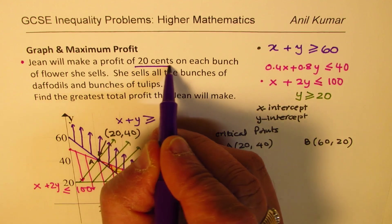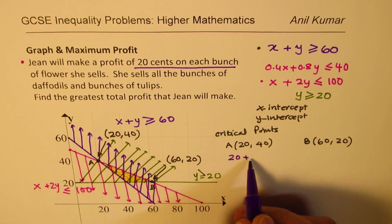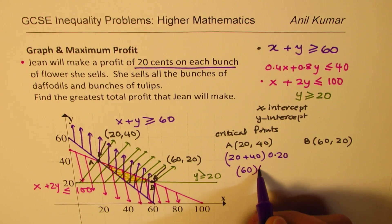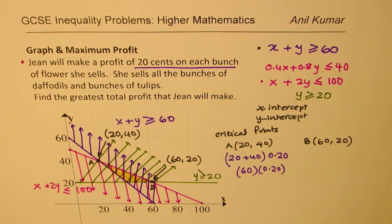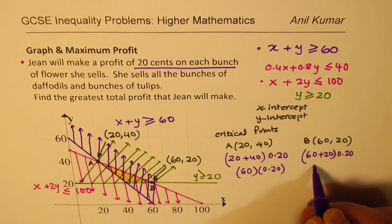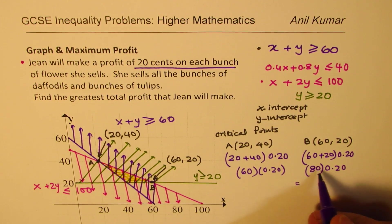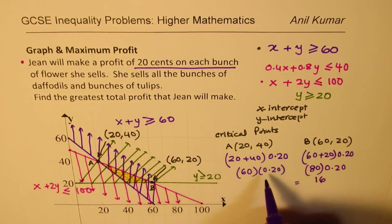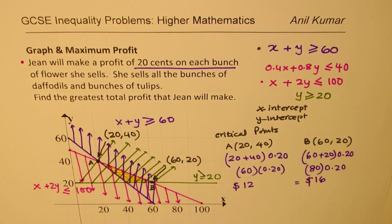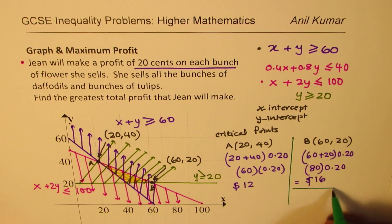So let's find the profit on each one of them. Since the profit is 20 cents on each, whether it is daffodil or tulip, the profit will be 20 plus 40 times 20 cents, 0.20. So in this case, it will be 60 times 0.20. And in this case, how much? Well, it is 60 plus 20 times 0.20. That is 80 times 0.20. So definitely 80 times 0.20 is more. So that gives us $16. Here it gives us 6 times 2 as $12. So the maximum profit is going to be for $16. So that becomes the maximum profit. So we get our answer.